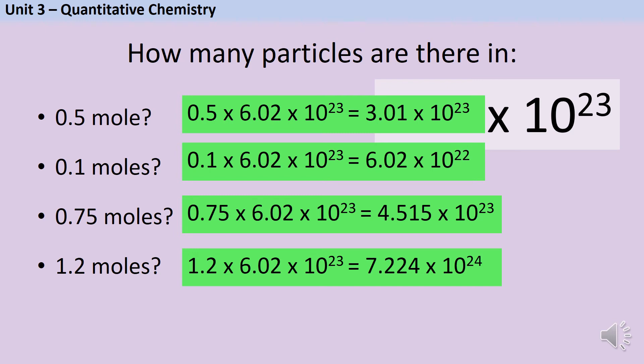So each time to work out the number of particles from the number of moles, you just multiply the number of moles by 6.02 times 10 to the 23.